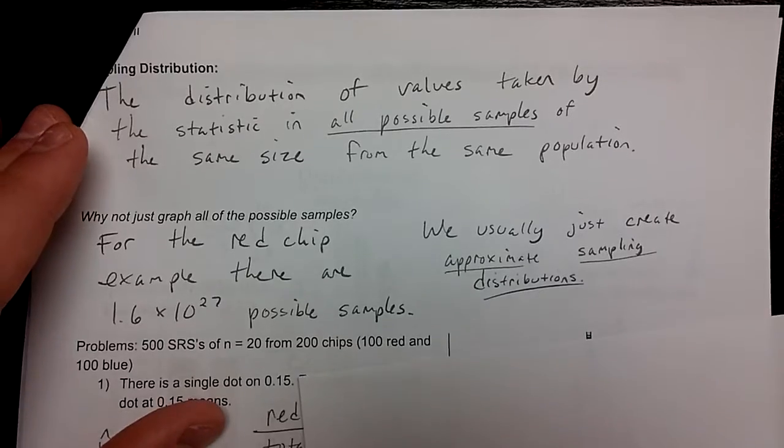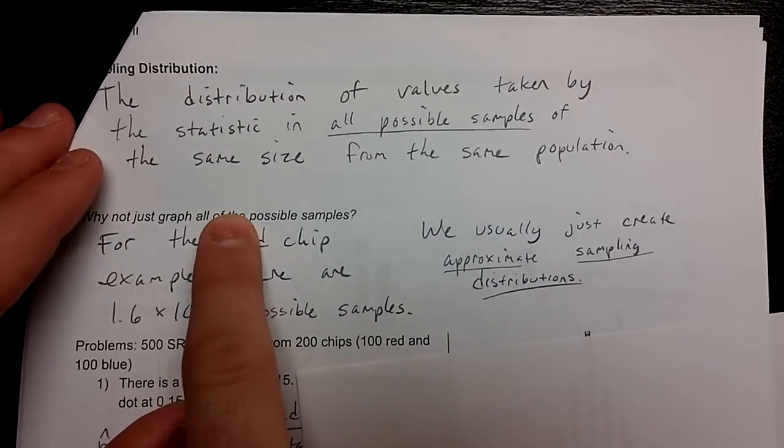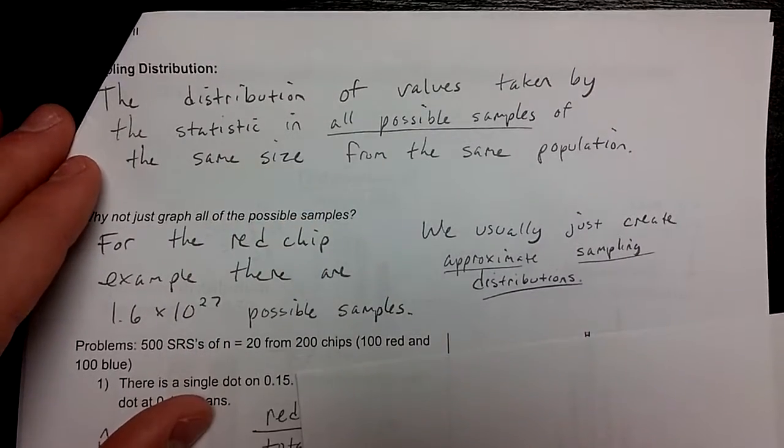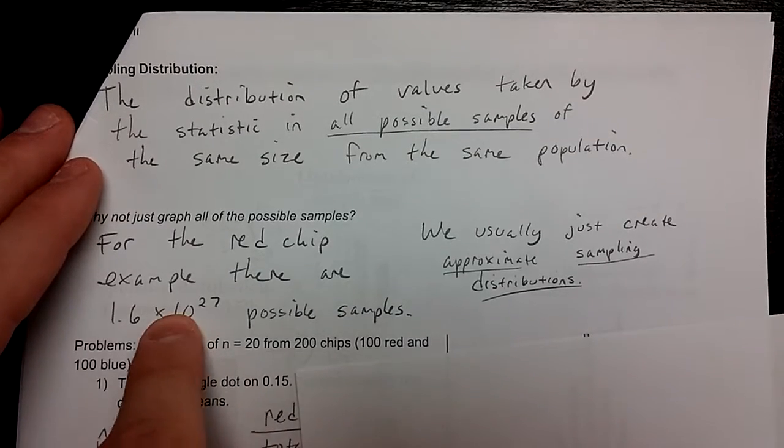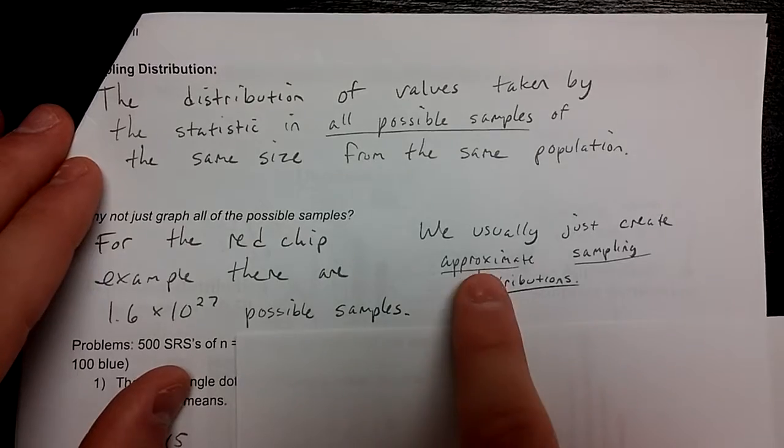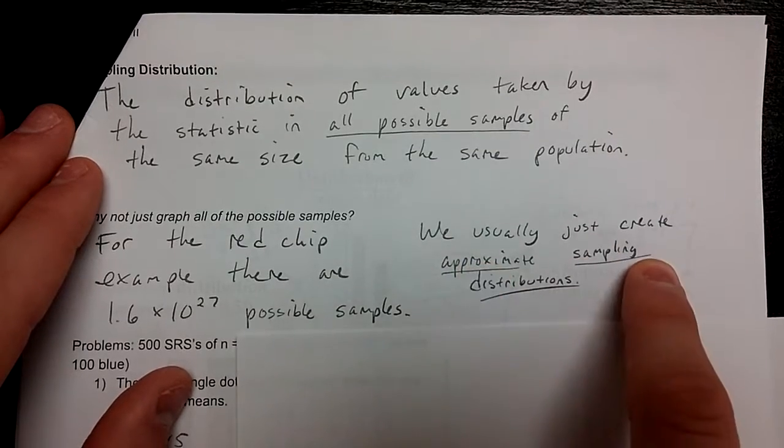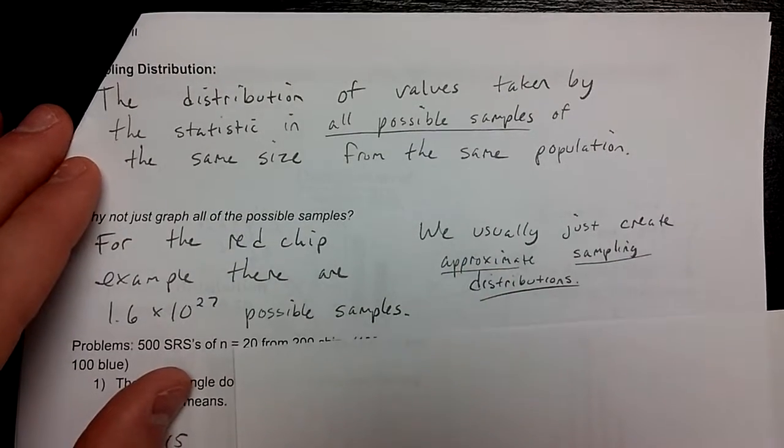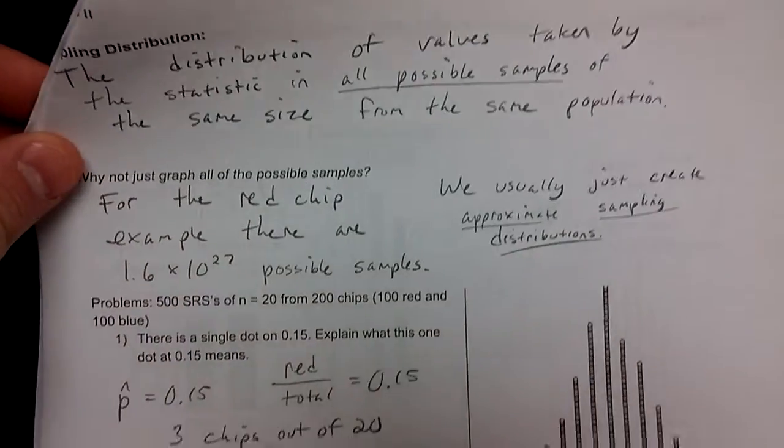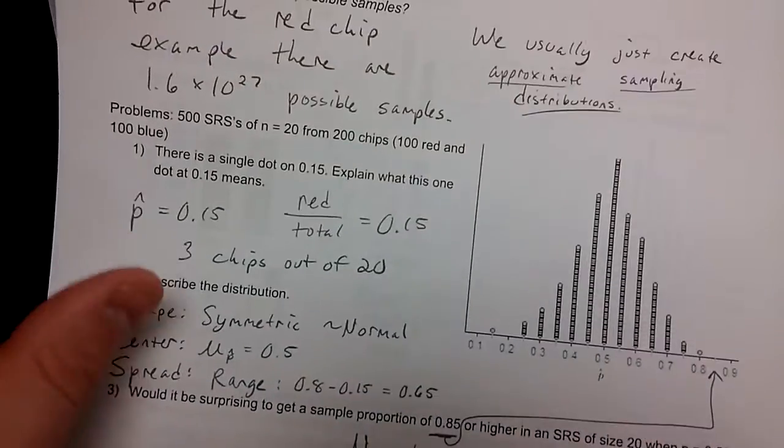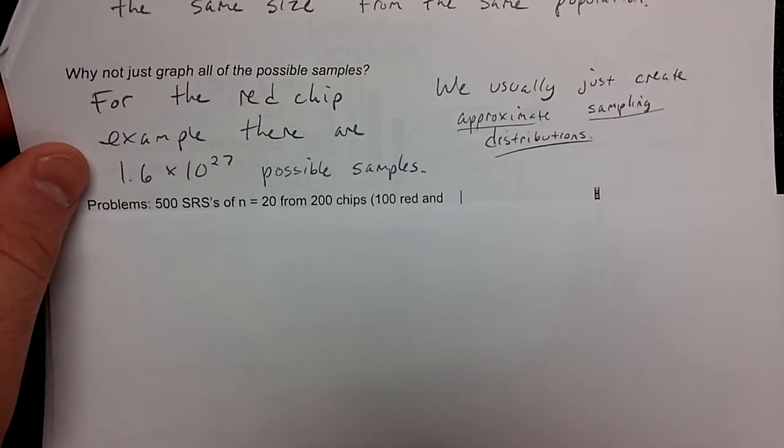So why not graph all of them? Because there's simply too many of them. We can't do all possible samples. So we're going to approximate the sampling distribution by taking a number less than a billion, billion, billion. So we usually just create approximate sampling distributions all the time. So whenever you see a sampling distribution, it's always approximate. We can't really graph the entire sampling distribution because there's too many samples to do.